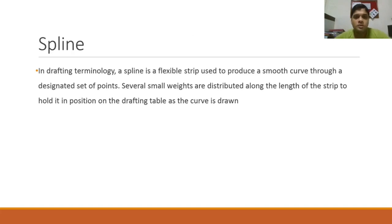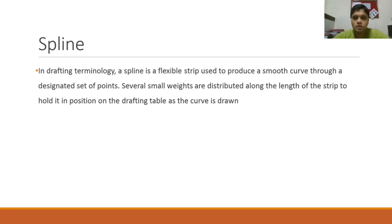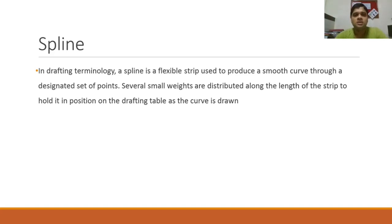The parametric cubic curve is also called a spline, and we all know how important splines are in drafting technologies. In drafting terminology, a spline is a flexible strip used to produce a smooth curve through a designated set of points, and several small weights are distributed along the length of the strip to hold it in position on the drafting table as the curve is drawn.